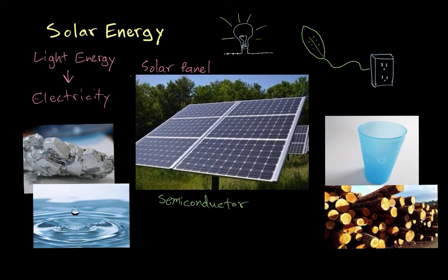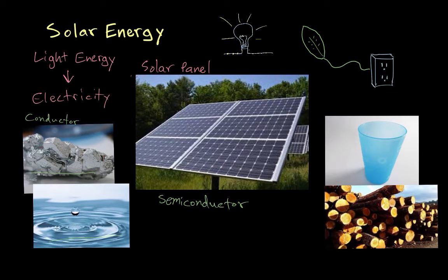A semiconductor is something that's kind of in between the two main types of electrical materials that we usually think about. The first kind is just a regular conductor, and a conductor is just something that allows electricity to flow through it. So metal is a conductor, water can also act as a conductor — it's just something that allows electrons to flow through it.